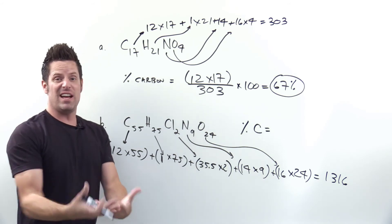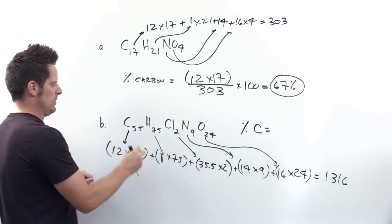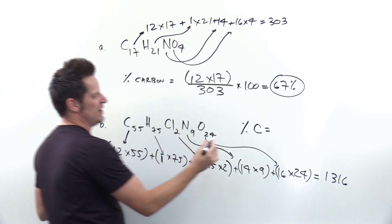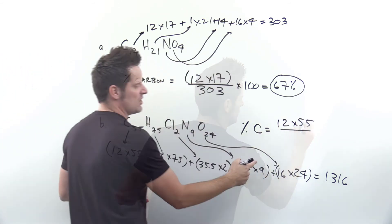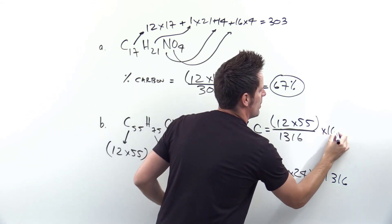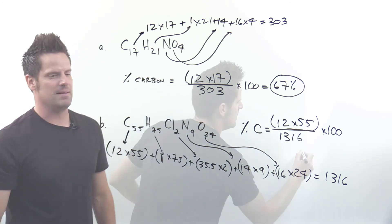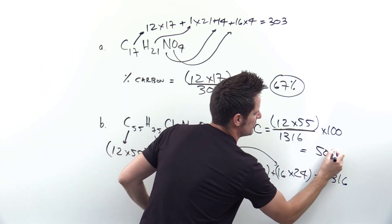Now what percent of that total 1,316 is just carbon? Well we just put the carbon amount, 12 times 55, in the numerator and divide it by 1,316 in the denominator, and then take that and multiply it by 100 to convert it into a percent. When I do that my calculator I end up getting about 50 percent.